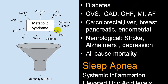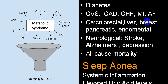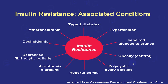Associated conditions seen along with metabolic syndrome include: colorectal cancer, liver cancer, hyperuricemia or gout, diabetes, increased incidence of stroke and MI, congestive heart failure, coronary artery disease, and non-alcoholic fatty liver disease or cirrhosis. Other associations include atrial fibrillation; breast, pancreas, or endometrial carcinoma; stroke; Alzheimer's disease; depression; sleep apnea; uric acid elevation; and systemic inflammation.